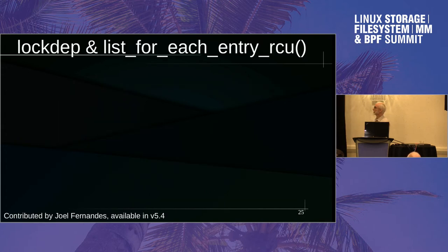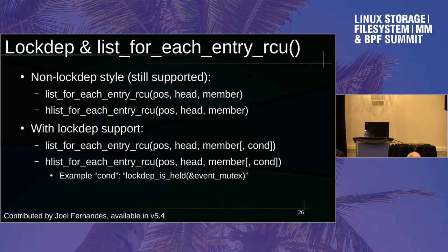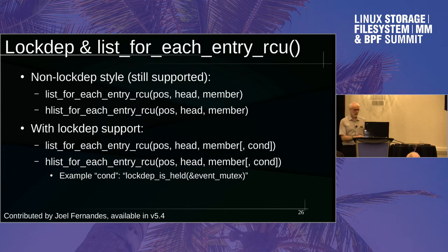Joel Fernandez added list_for_each_entry_rcu and hlist_for_each_entry_rcu enhancements in 5.4. These macros now support an optional lockdep expression: you can say list_for_each_entry_rcu, give it the position variable, the list head, the struct member, and then optionally something like lockdep_is_held(&event_mutex). This lets you have code callable by the updater holding a lock, or by the reader via call_rcu — without needing 55 million different names for each entry-RCU variant.